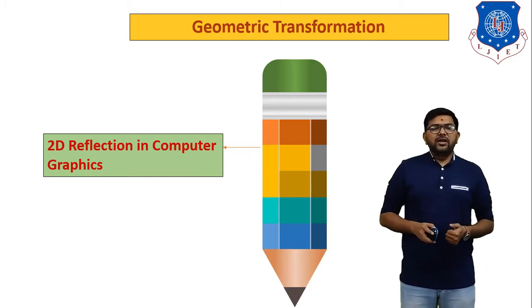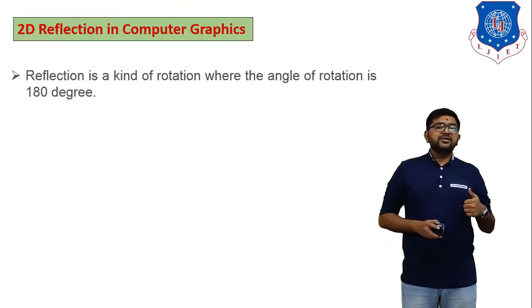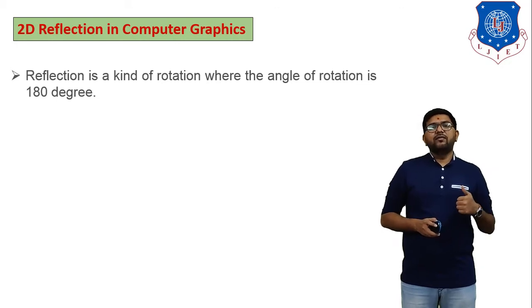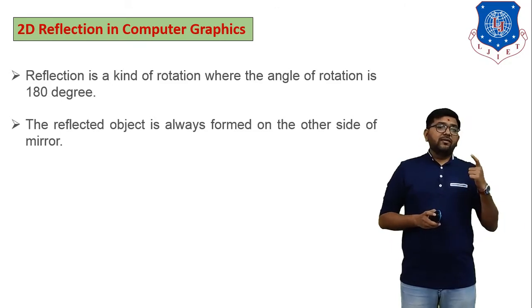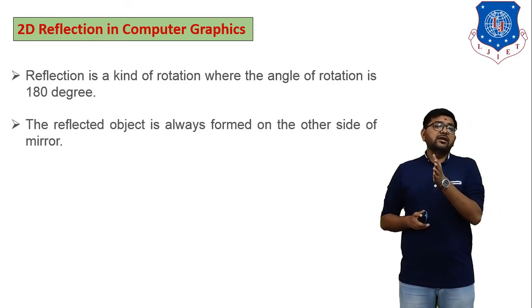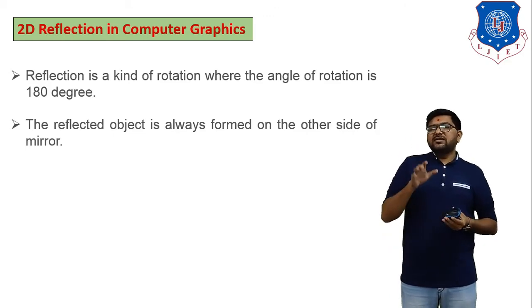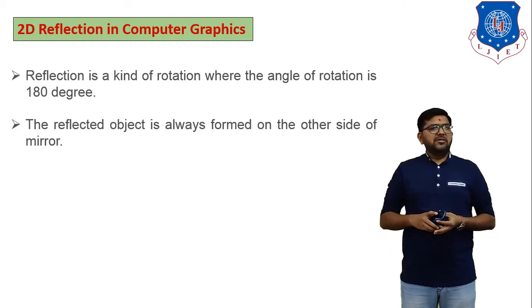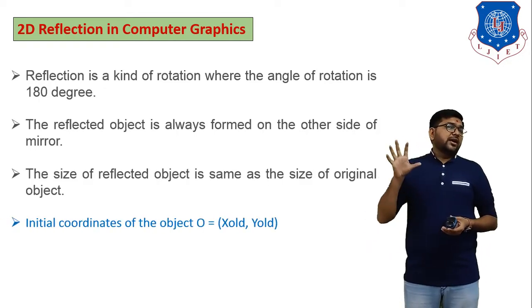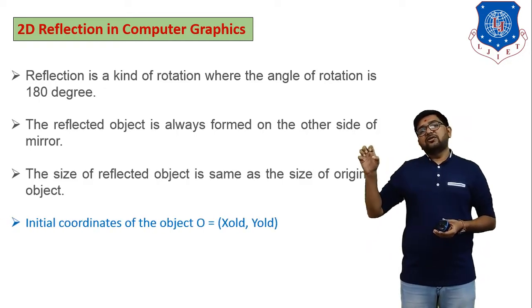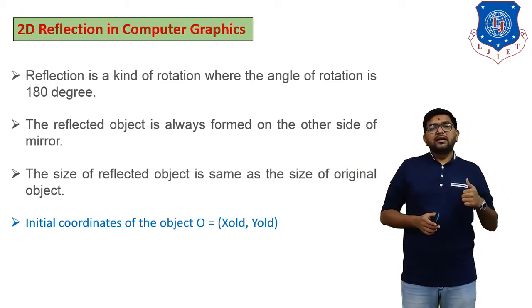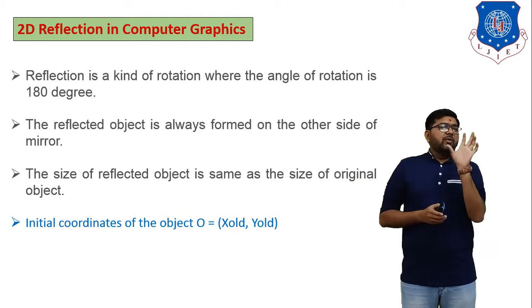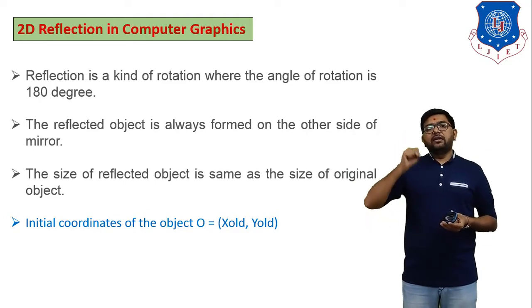2D reflection in computer graphics: reflection is a kind of rotation where the angle of rotation is 180 degrees. The reflected object is always formed on the other side of the mirror. Reflection means it is a type of mirror effect. The size of the reflected object is the same as the size of the original object — in reflection, size of the object will not change. Now we have to derive the equation of the reflection.